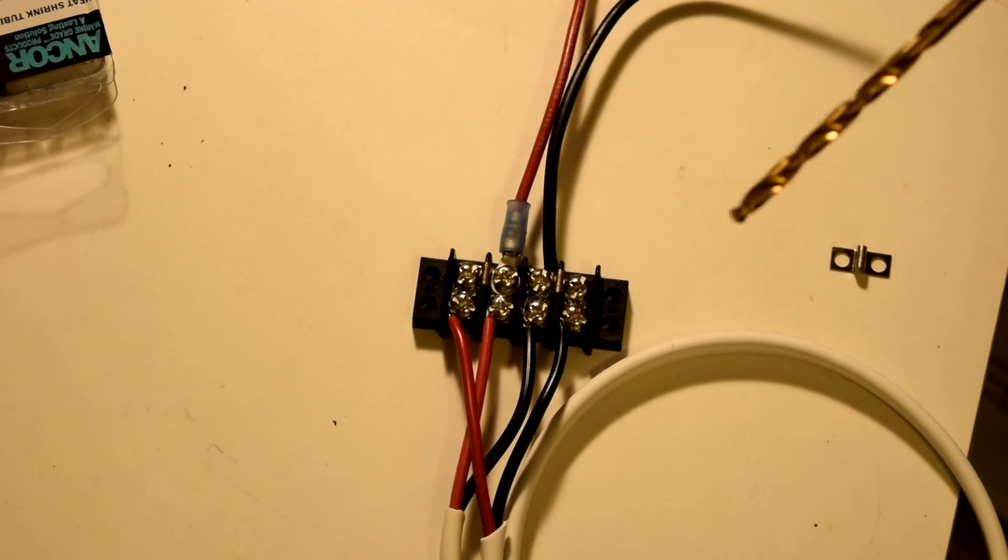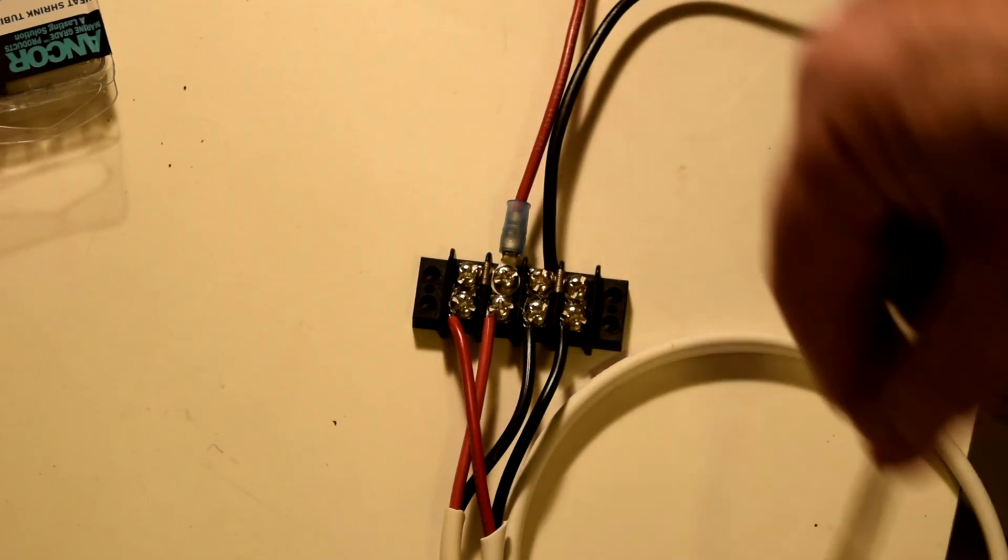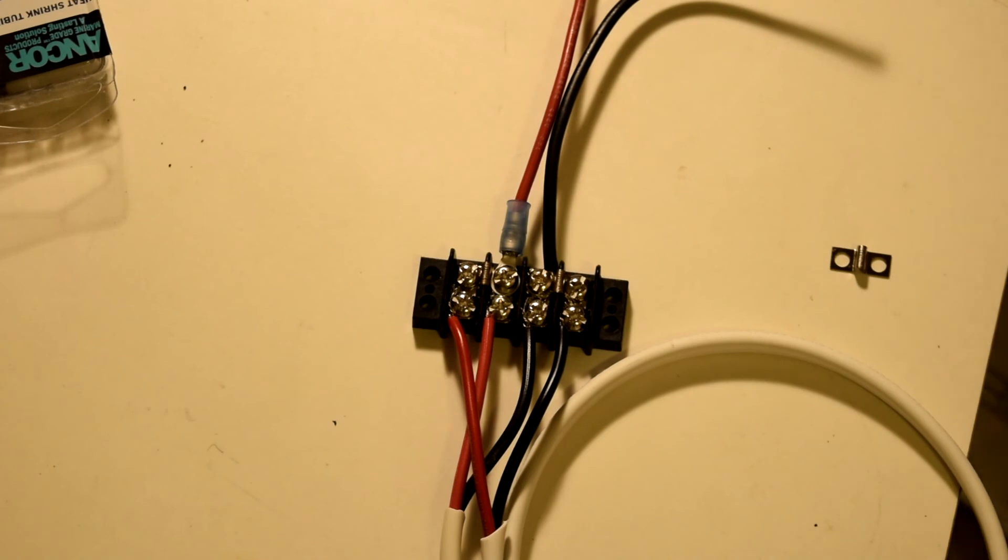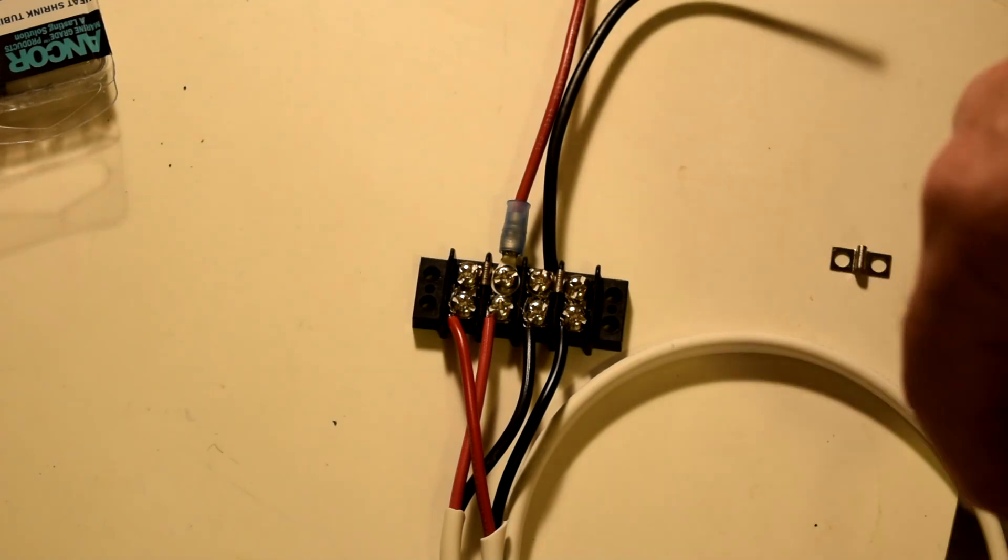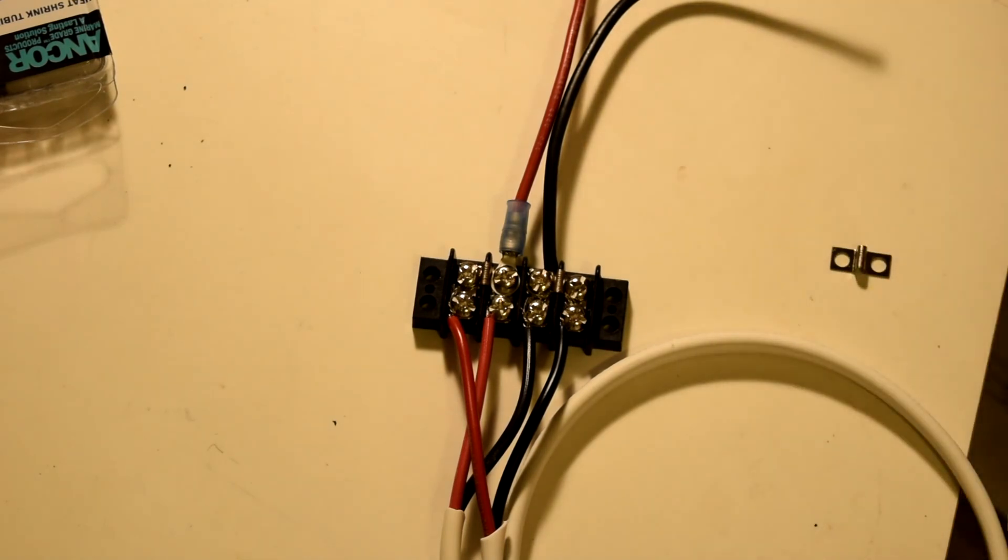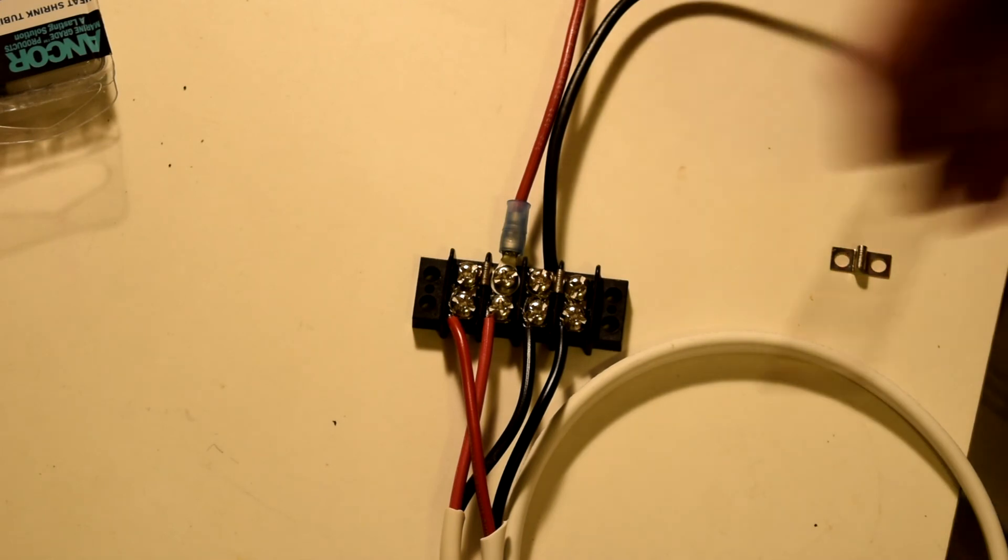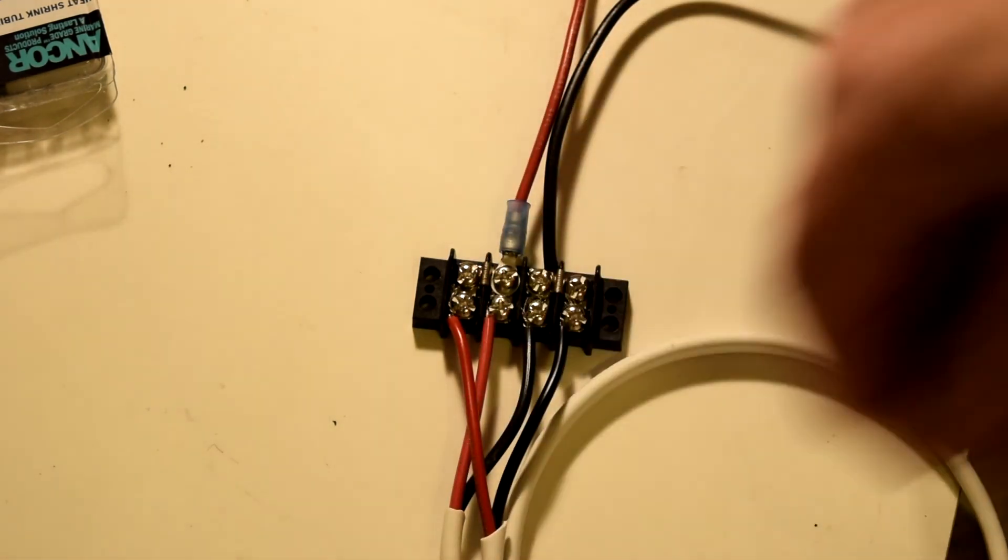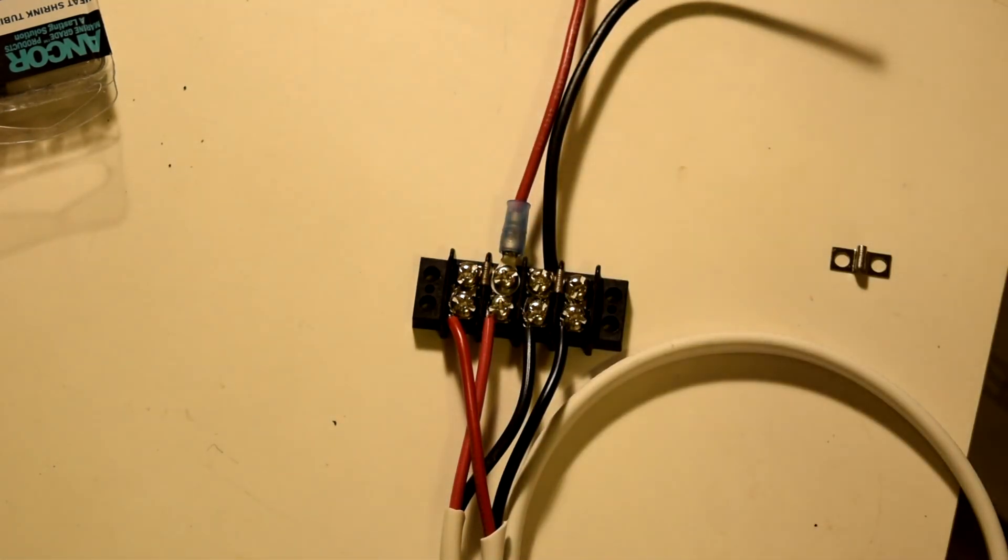One additional thing I would do is instead of coming direct from the solar panel to the barrier terminal strip, I would have a connector of some sort, a plug in the wire here that the solar panel plugs into so you could easily disconnect the solar panel from the system.